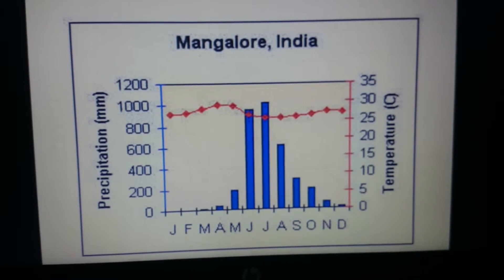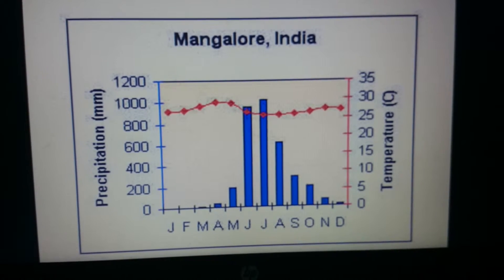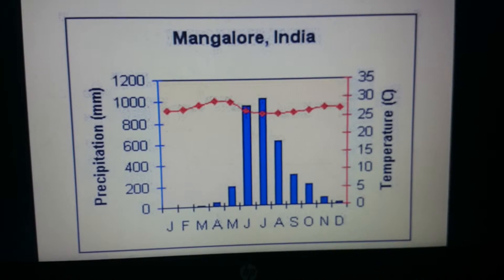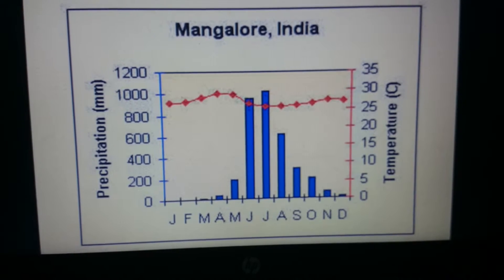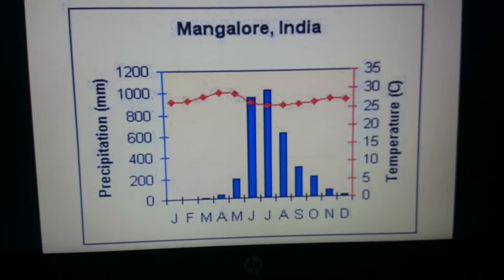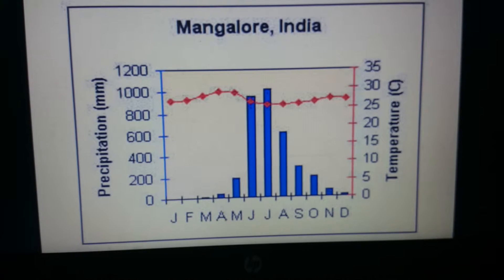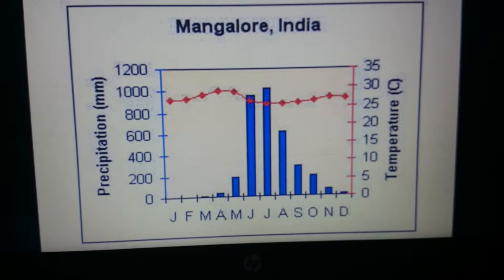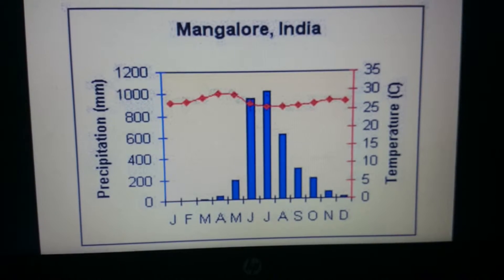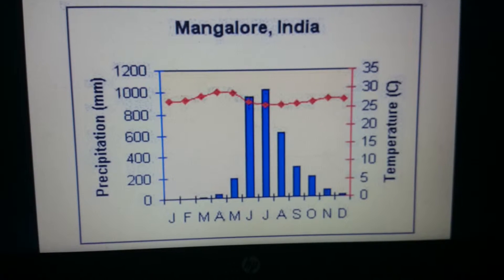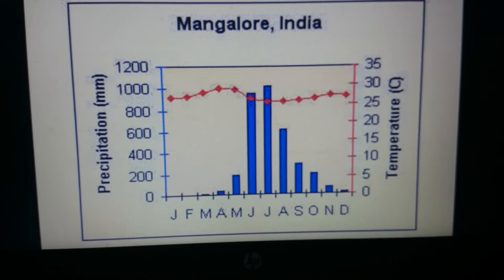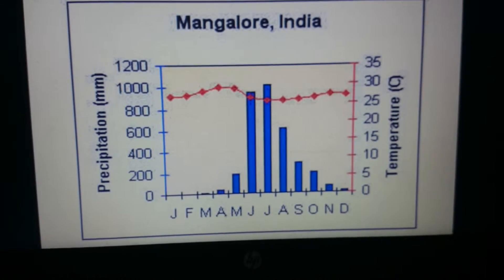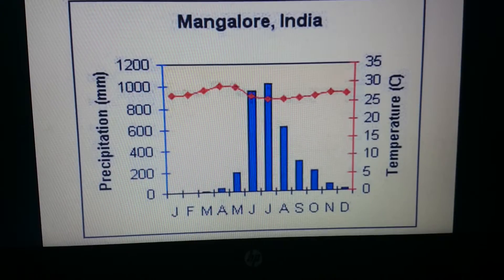The bar graph shows precipitation. It is normally tracked across one year from January to December. The axis can be on the left or on the right — there is no fixed location. For temperature, it is tracked using the line graph with dots or points indicating the respective average temperature for that month.